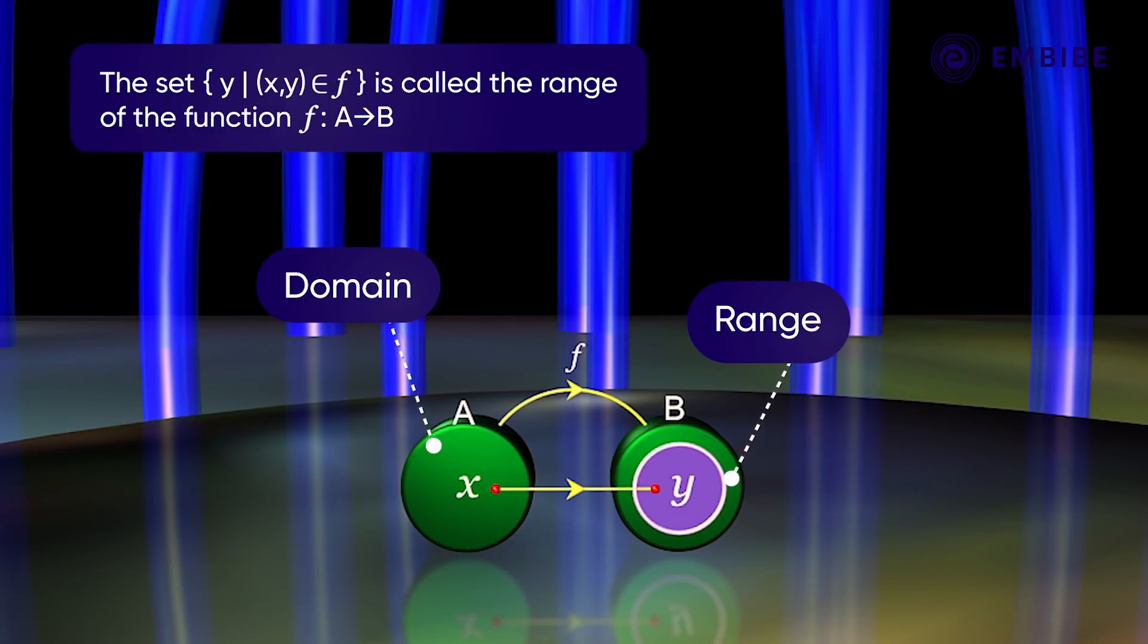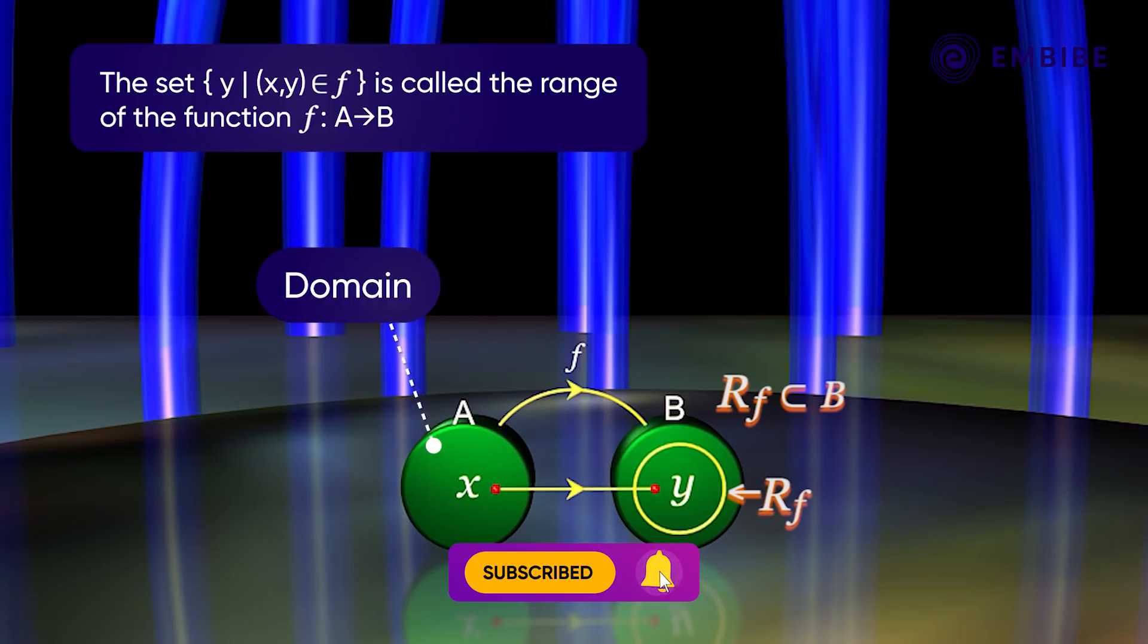The range of the function f: A to B is denoted by r_f. It is clear that r_f is a subset of B. The notation for the domain of f: A to B is d_f.